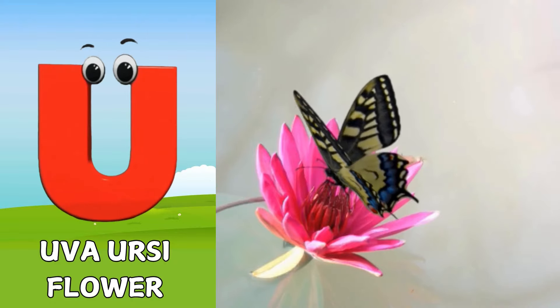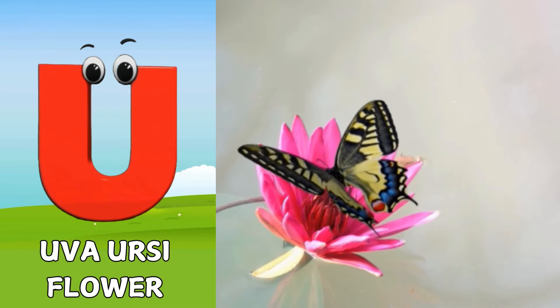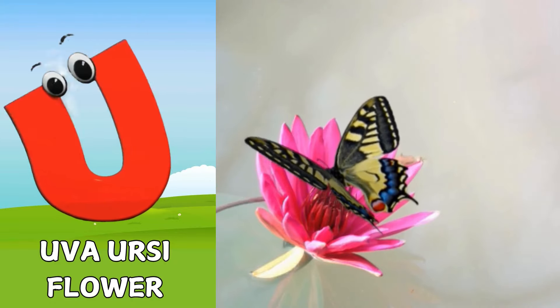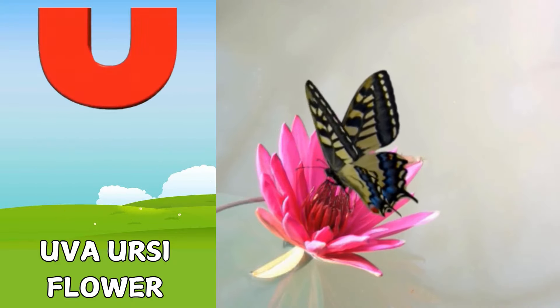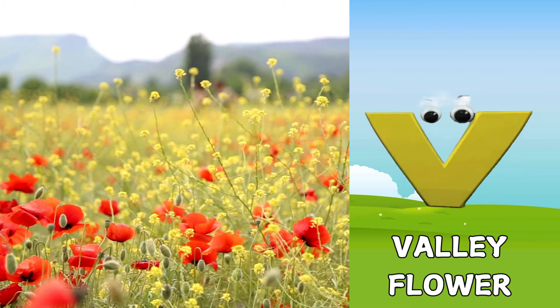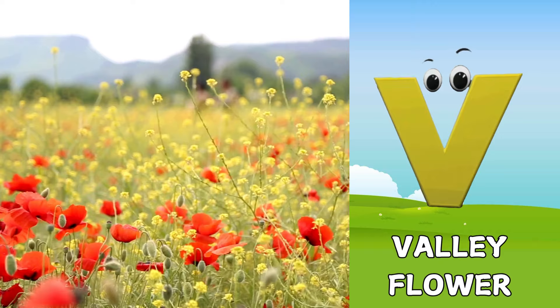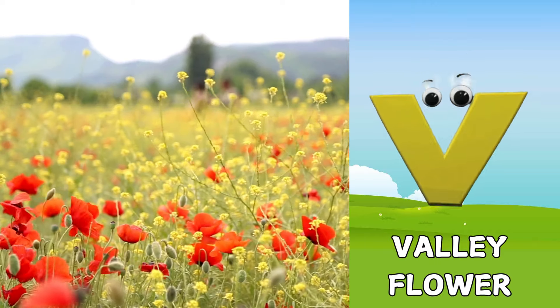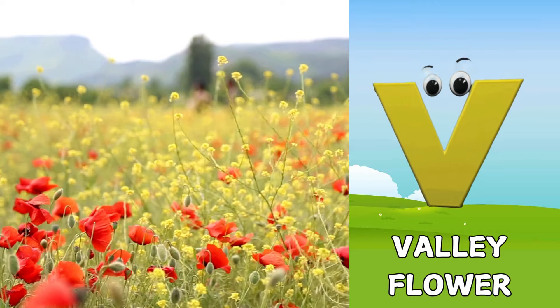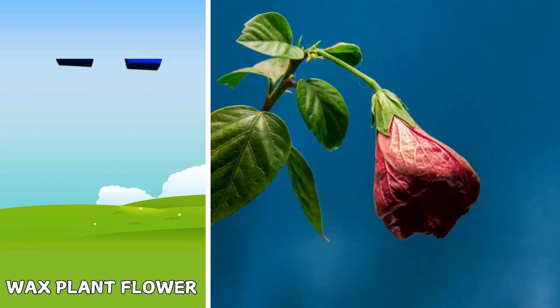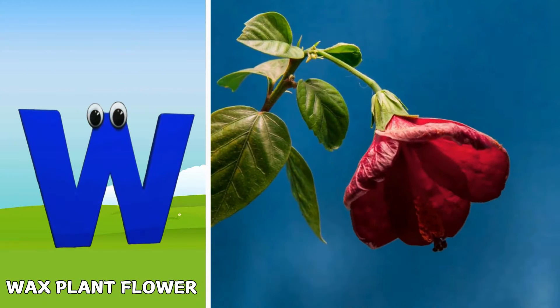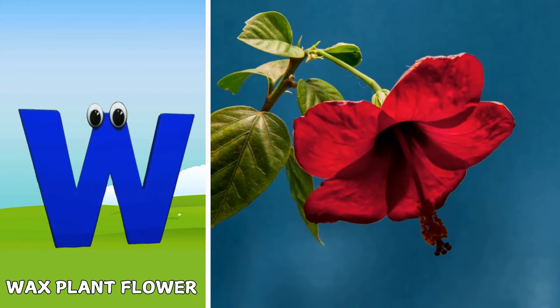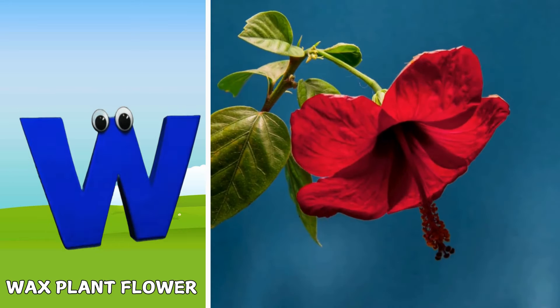U is for uva ursi flower. U. Uva ursi flower. V is for valley flower. V, v. Valley flower. W is for wax plant flower. W, w.